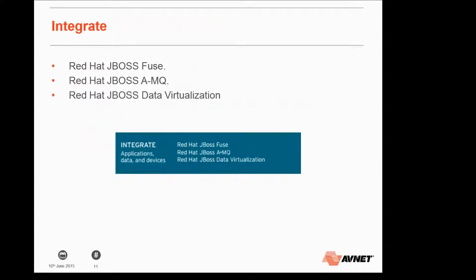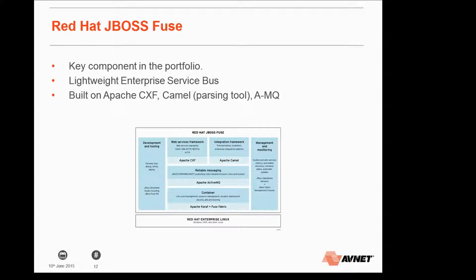Moving on to the Integrate stack — three products: Red Hat JBoss Fuse, Red Hat JBoss AMQ, and Red Hat JBoss Data Virtualization. These are all individual subscriptions you can buy from Red Hat depending on your business requirements. Red Hat JBoss Fuse is an enterprise service bus — a software model for designing and implementing communication between interactive applications. It passes messages around and is built on Apache CXF, Camel, and AMQ to provide reliable messaging, web services, and integration frameworks, all running on RHEL.